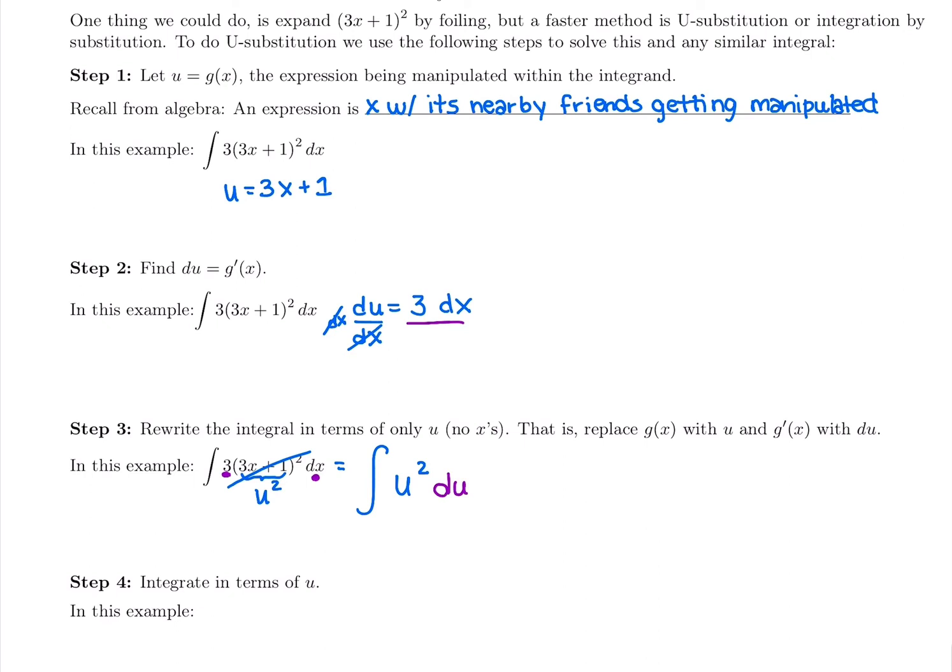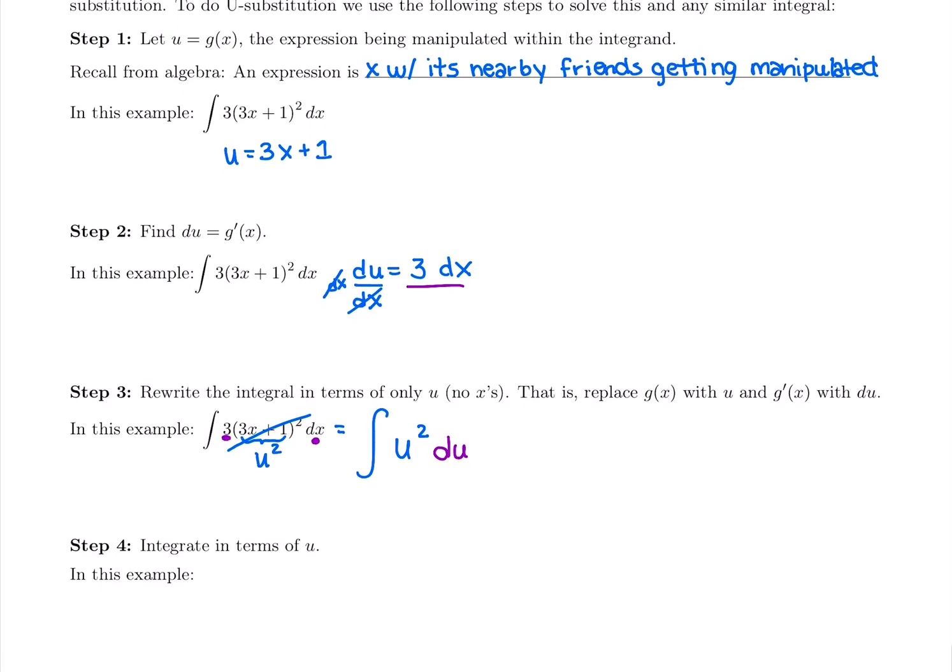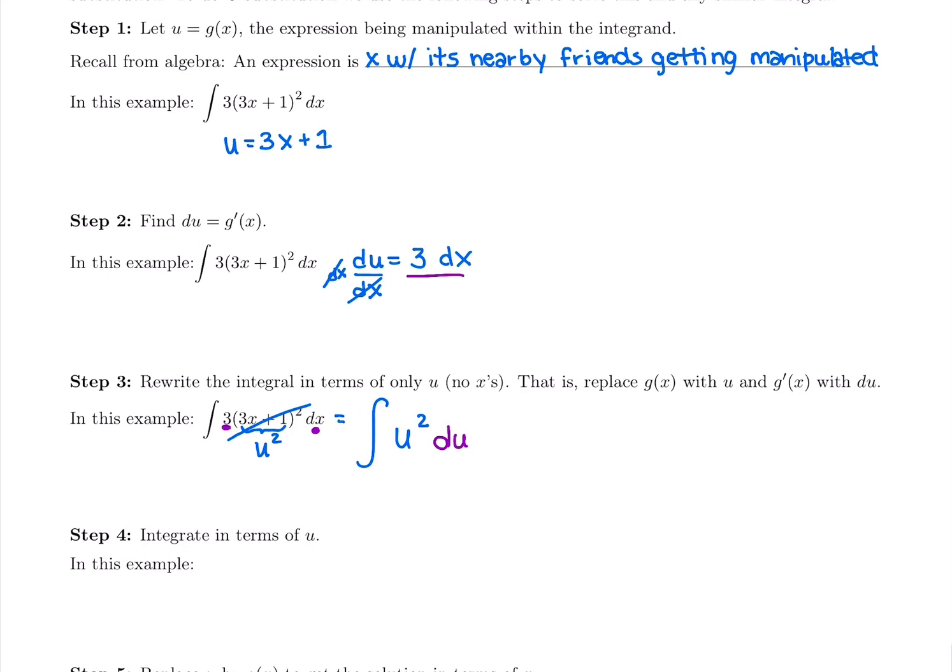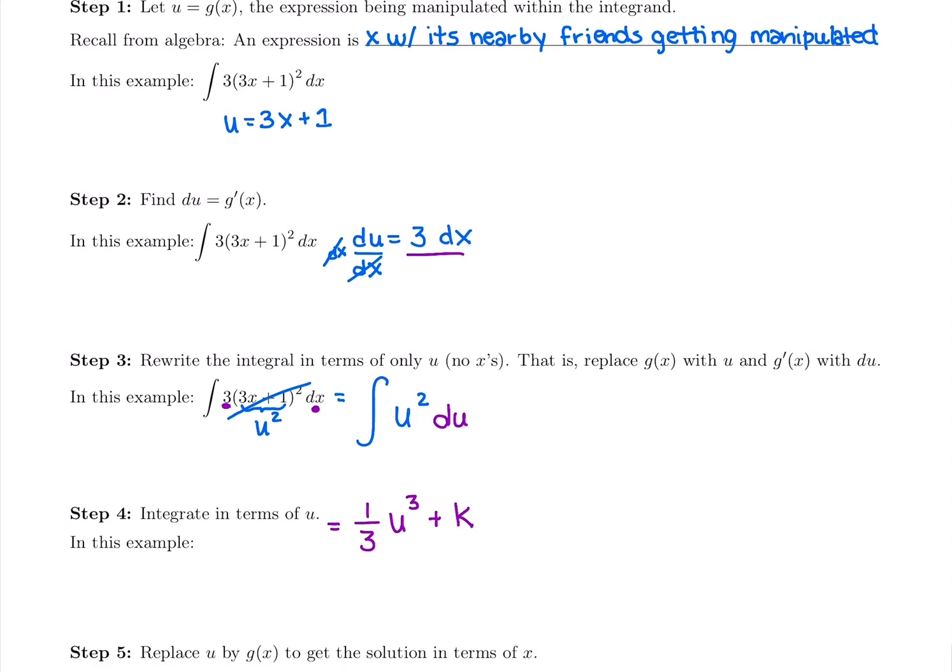Now our next step should be the easiest step. We get to take the antiderivative. We've made something look like a basic integral. We're going to add 1 to the power, so we have 1 over (2 + 1 is 3), u³. Normally we end with a plus c, but since we change variables, I'm going to change that constant of integration. I'm going to write plus k when I'm in terms of u.